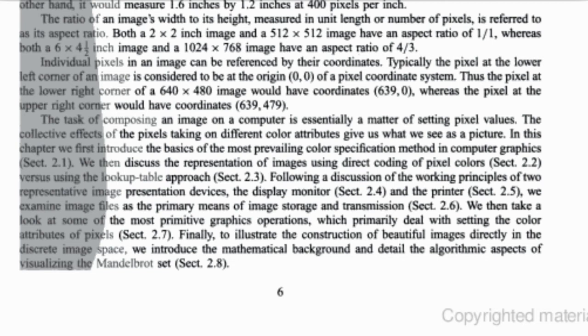Thus, the pixel at the lower right corner of a 640 by 480 image would have coordinates (639, 0), whereas the pixel at the upper right corner would have coordinates (639, 479).